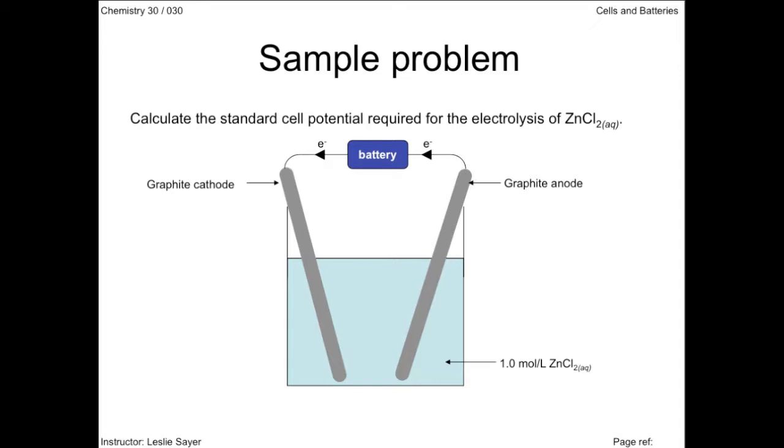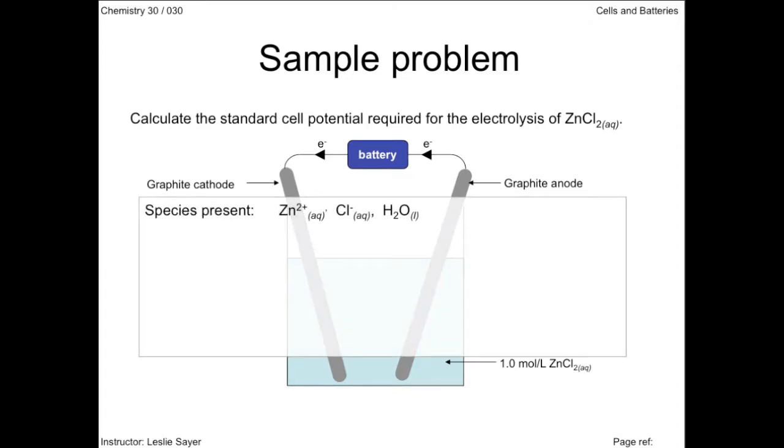We're being asked what should the minimum voltage of the battery be. Well, we start by deciding on the half reactions to write out. What species are present? Zinc ions, chloride, and water. It might not play a part in the calculations, but list it in case.